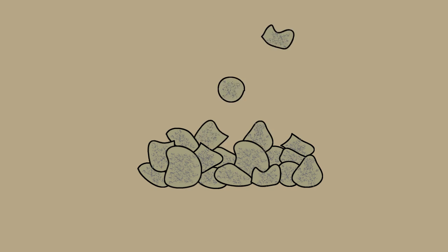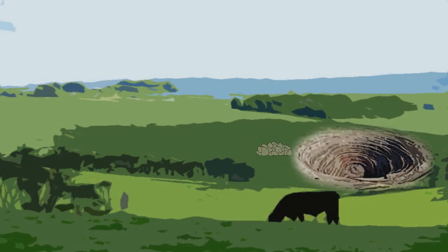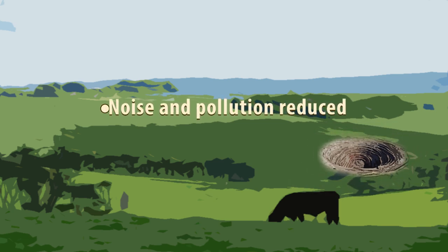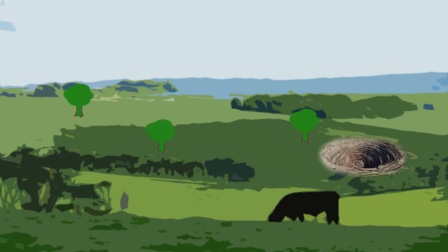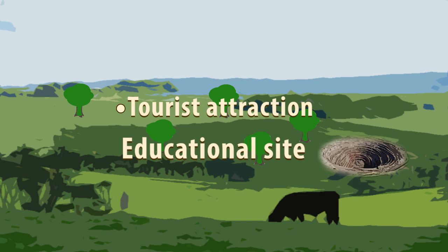Limestone is a very important material and obviously needs to be quarried. Although there are many disadvantages to quarrying, the adverse effects can be minimized. The quarry can be smaller, therefore reducing the noise and pollution levels. Instead of having many trucks transporting limestone out of the quarry daily, the frequency of transportation can be reduced. Once the quarrying is done, trees can be replanted in the surrounding area. The empty quarry may also be used as a tourist attraction and as an educational site.